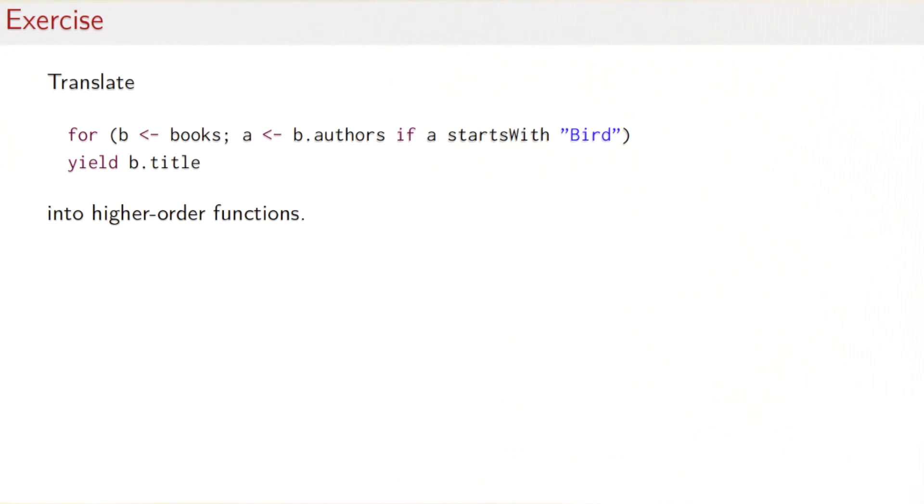So how would we solve that exercise? Well let's follow the schema that we have seen previously. So we would start with books. And we have two leading generators, so that would lead to a flatMap where our function takes the variable to the left of the generator.